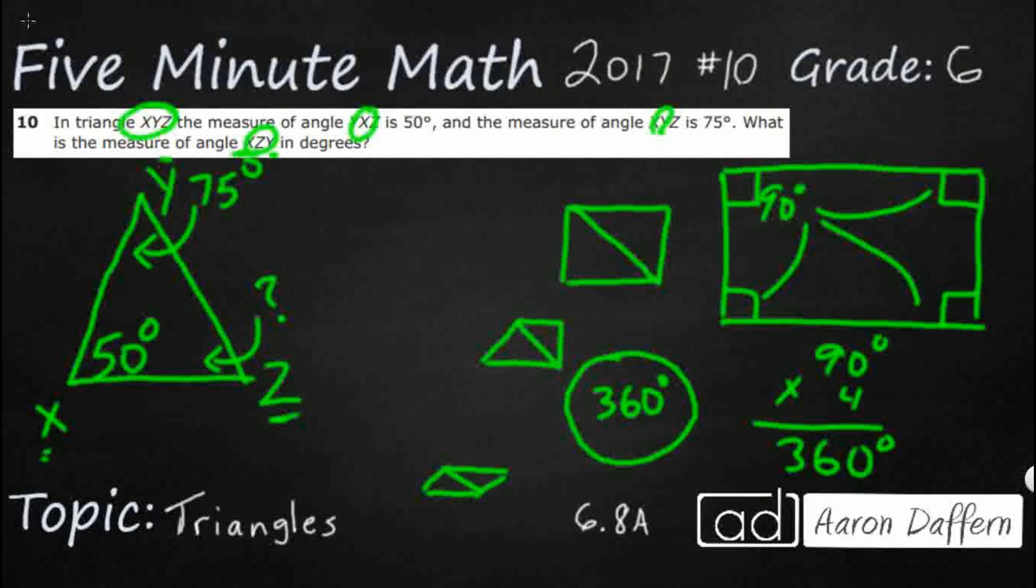So any quadrilateral cut in half gets you two triangles, which means the measure of the angles inside any triangle is 360 cut in half, which means that is going to equal 180. So that's something you probably should memorize is how many degrees are in any triangle, 180. But if you ever get stuck, that's how you can remind yourself.